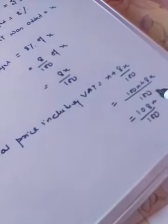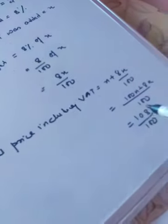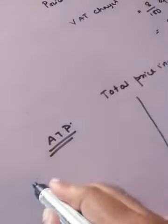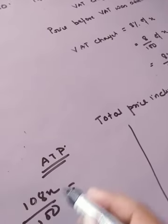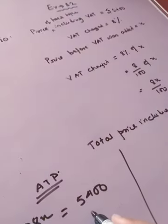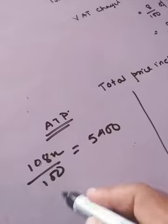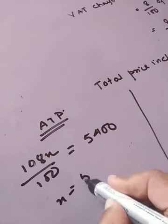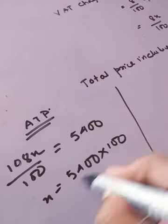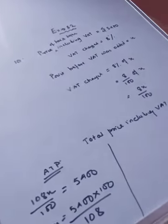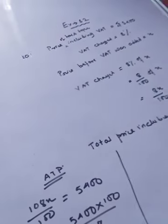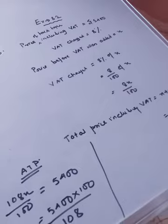This is the price including VAT, and this price is already given as 5,400. So according to the problem, 108X by 100 equals 5,400. Both are the price of the hair dryer including VAT, so just find the value of X by transposing — do the criss-cross method and solve it to get the final answer. Thank you and take care.